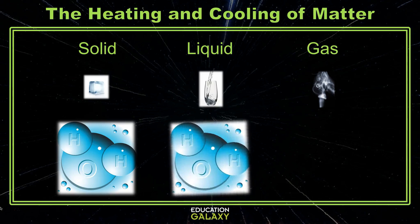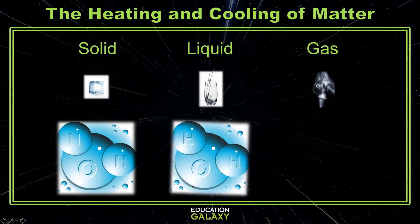When the temperature of water warms up and rises above zero degrees Celsius, then the water molecules begin to vibrate, allowing the molecules to slip and slide past each other, but they are still touching each other. This is the liquid state. Because the molecules can move around each other, liquid will take the shape of whatever container you put them in, like a glass.